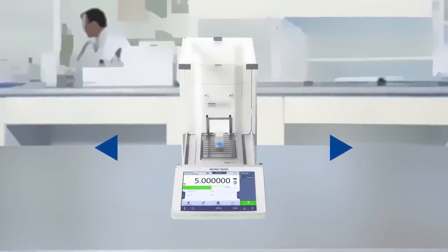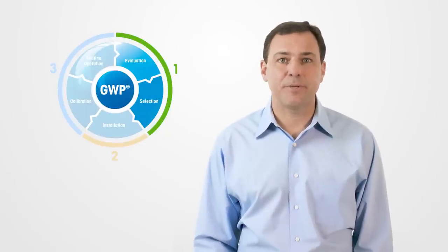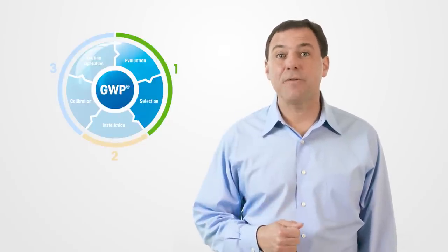The life cycle of weighing starts by evaluating your weighing process and choosing the right equipment. We link your weighing requirements to an instrument that is fit for purpose and documented by issuing the GWP recommendation report. Simple, right? This completes step number one, selection of the right instrument.